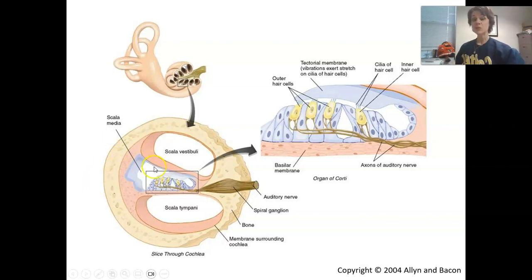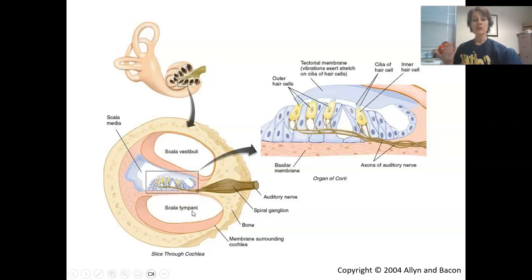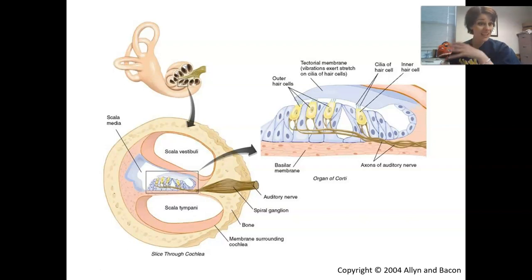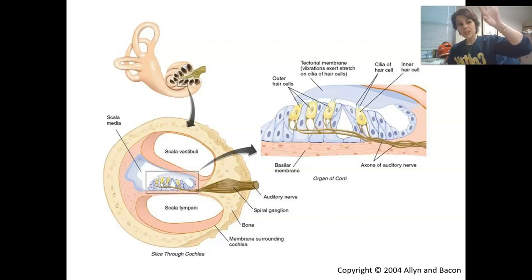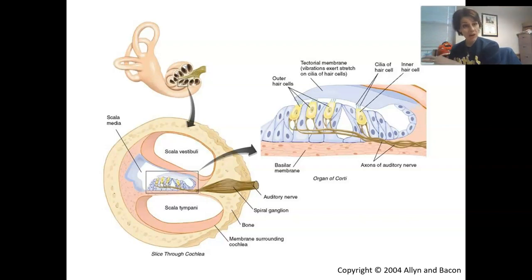We have the scala vestibuli, the scala media, and the scala tympani. The scala tympani is in contact with the round window — another opening in the bone of the cochlea. We need the round window to make sure that fluid doesn't get compressed in the cochlea. Fluid needs to move freely for us to hear sound, so as the oval window pushes in, we need another membrane pushing out, and I'll show a picture of both the oval and round window later.